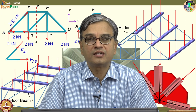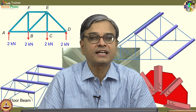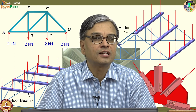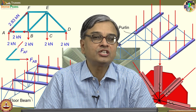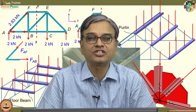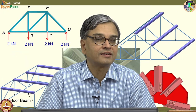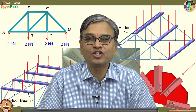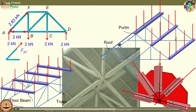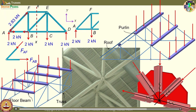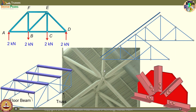Let us continue our discussion on trusses. In the last class, you have seen a variety of practical structures that use trusses for supporting the loads. We have also seen the origin of the word truss — it has a French connection and the meaning was 'collection of things put together.' You can change it to 'collection of essentially two-force members.' No member is continuous through a joint, whether it is a two-dimensional planar truss or a three-dimensional truss.